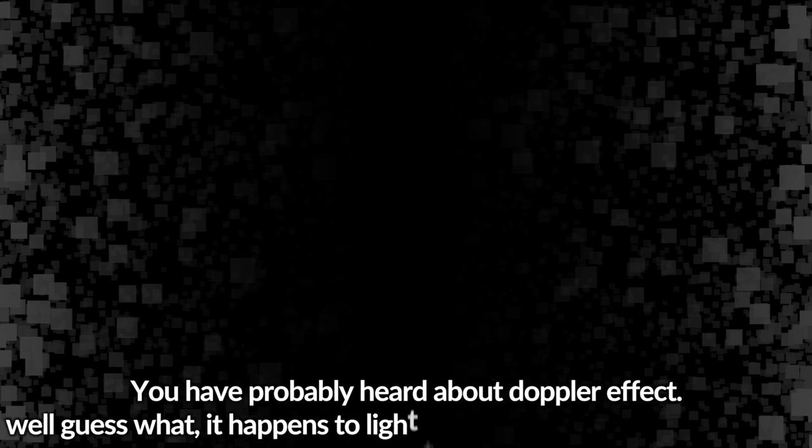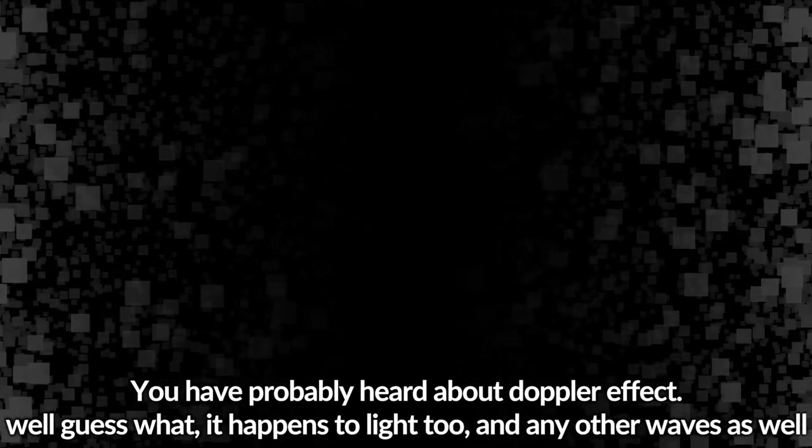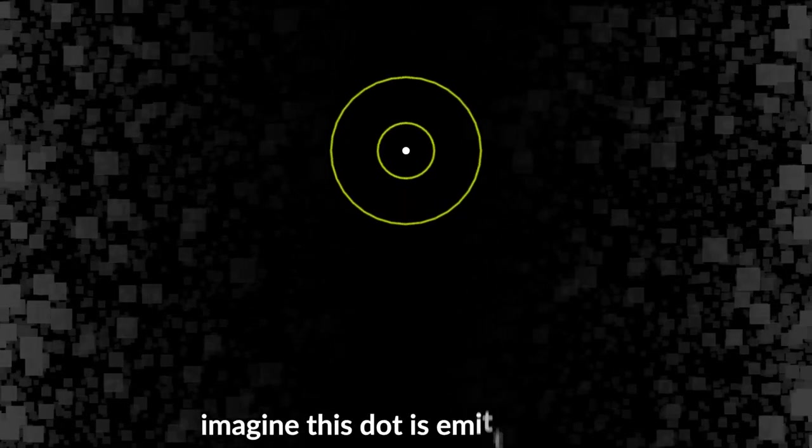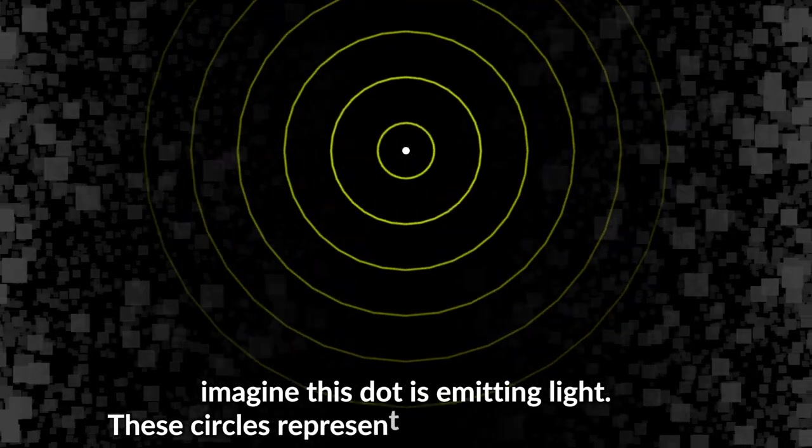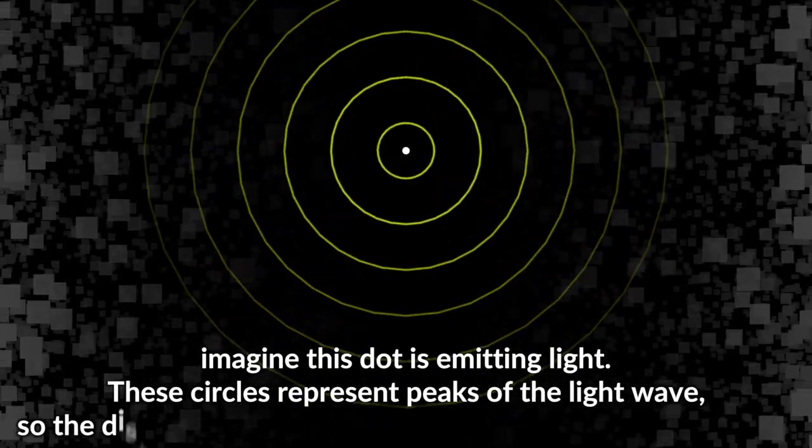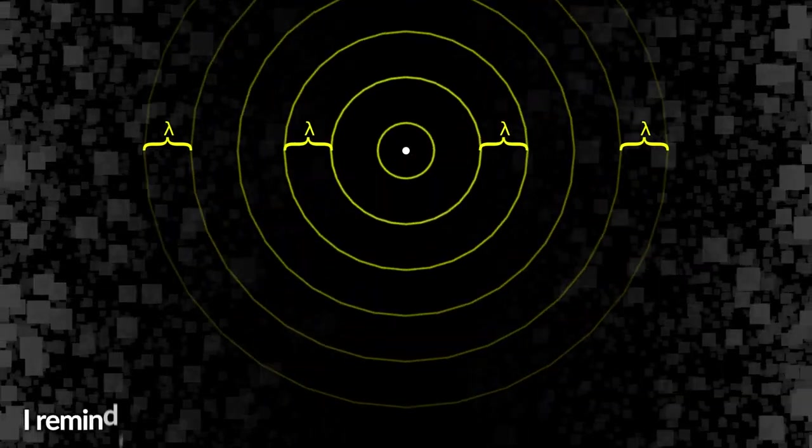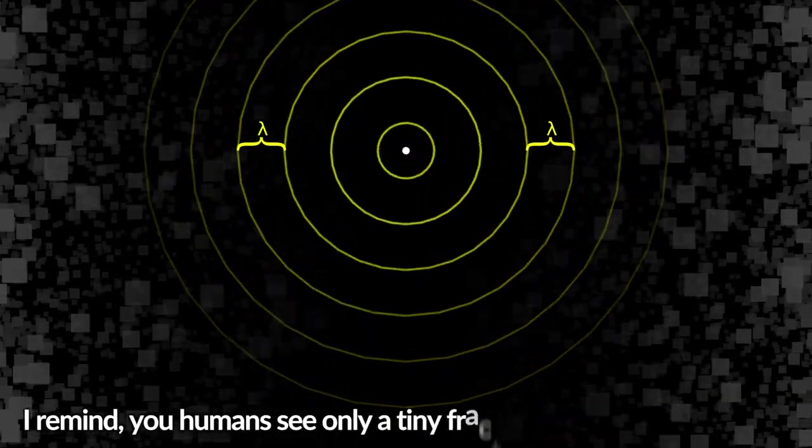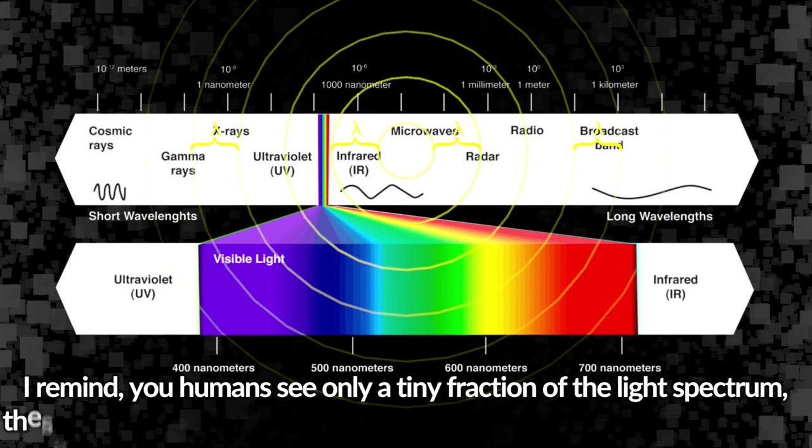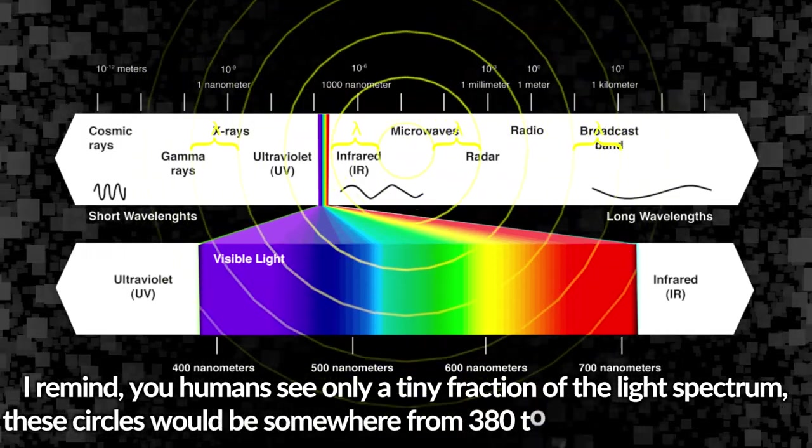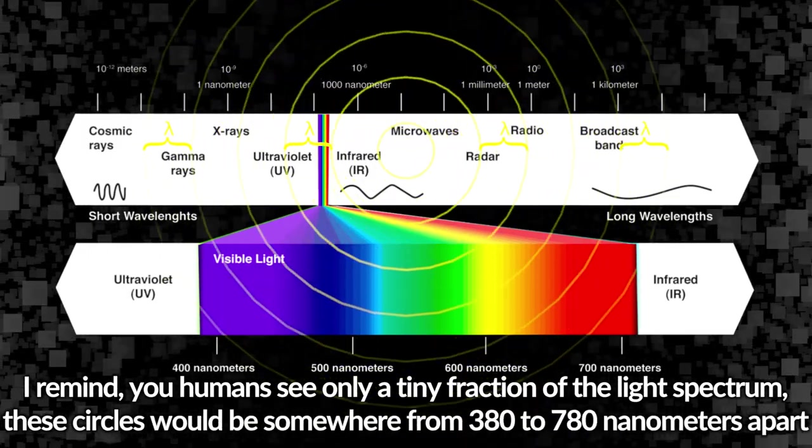And that is not all. You have probably heard about Doppler effect. Well, guess what? It happens to light too, and any other waves as well. Imagine this dot is emitting light - these circles represent peaks of the light wave, so the distance between two circles is the wavelength of light. I remind you, humans see only a tiny fraction of the light spectrum, so these circles would be somewhere from 380 to 780 nanometers apart.